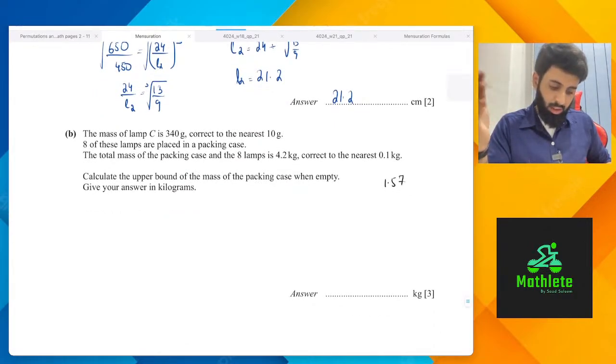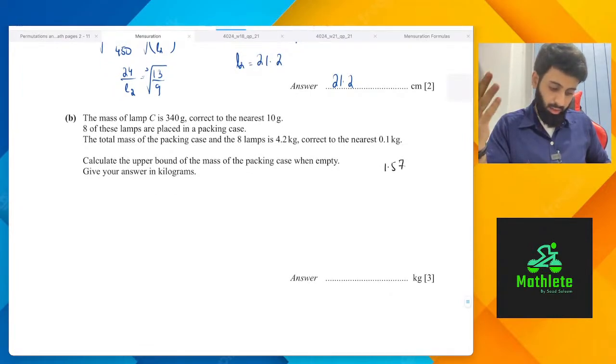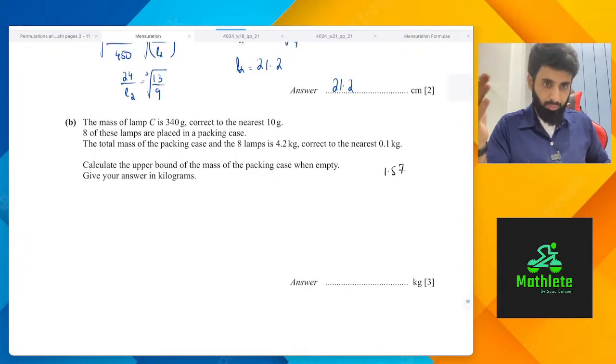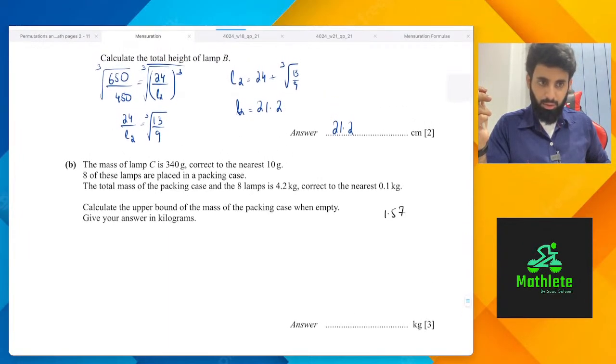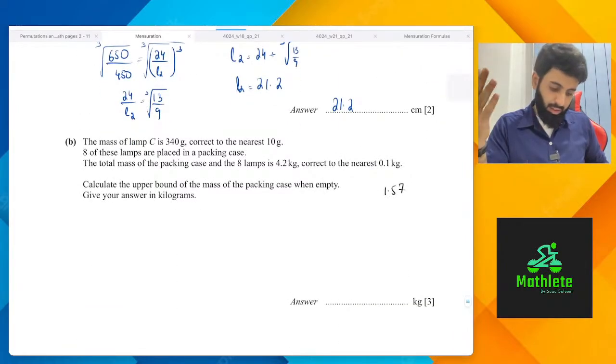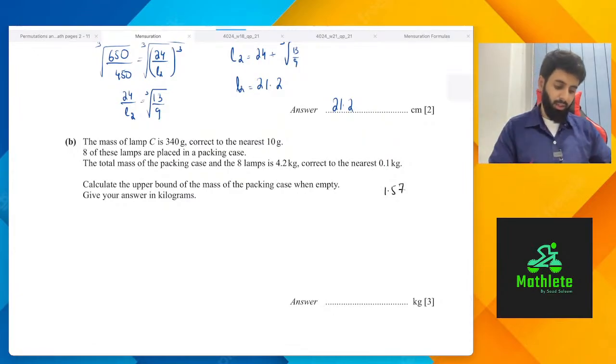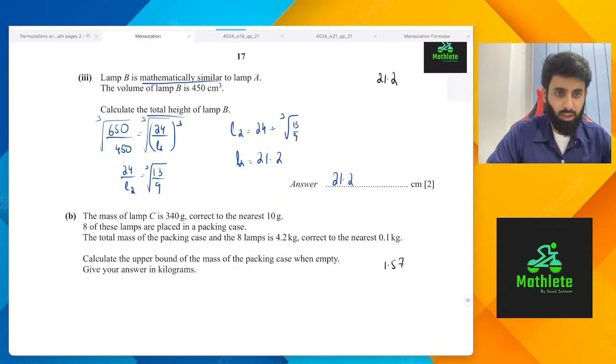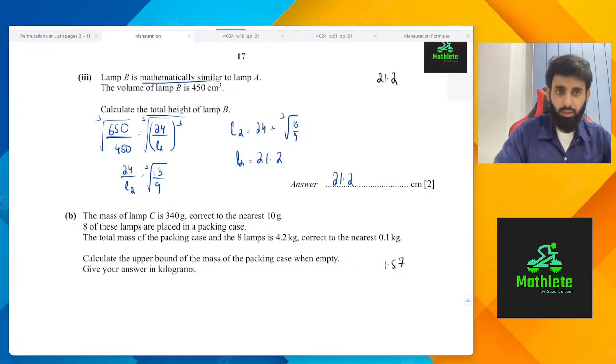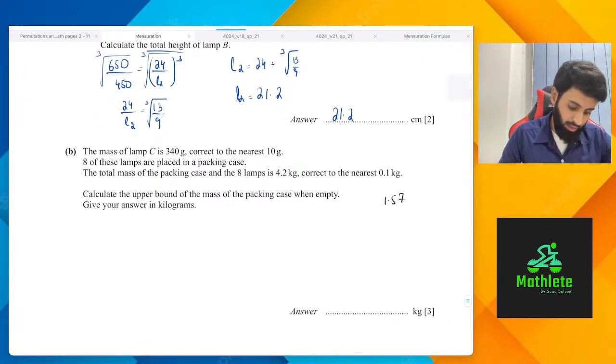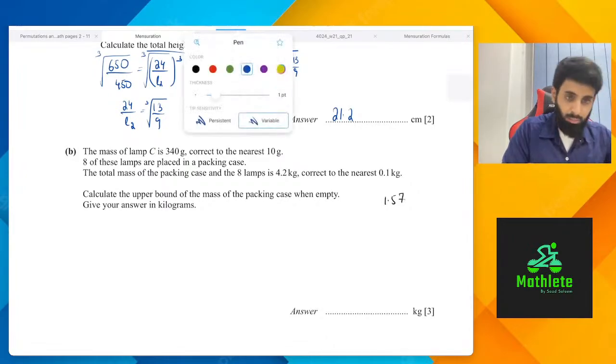Part B says the mass of lamp C is 340 grams correct to 10 grams. This is again a limits of accuracy question. Then it says eight of these lamps are packed in a packing case. The total mass of the packing case and lamps is 4.2 kg correct to the nearest 0.1 kg. Calculate the upper bound of the mass of the packing case when empty.